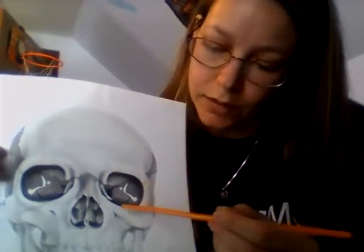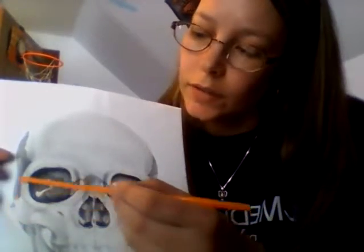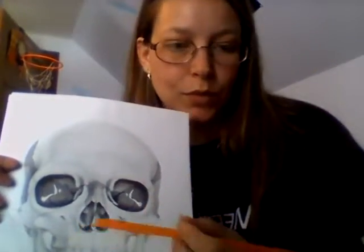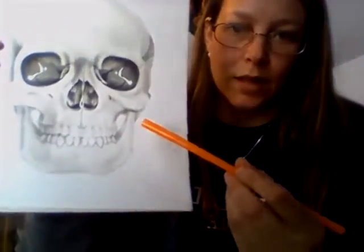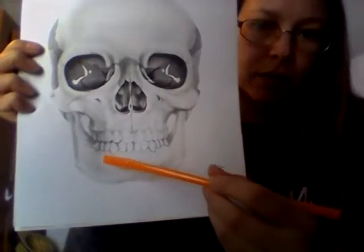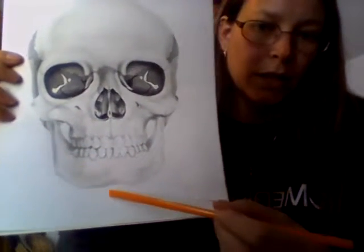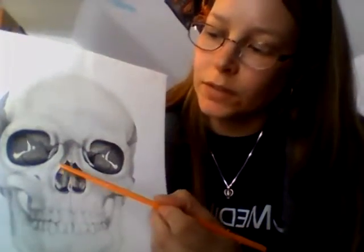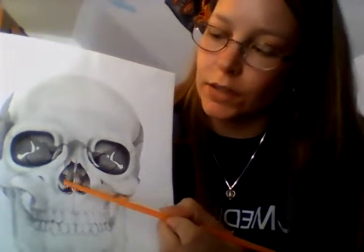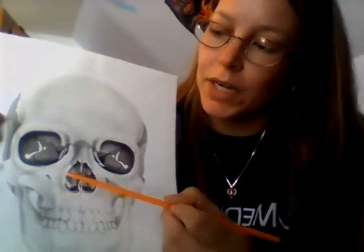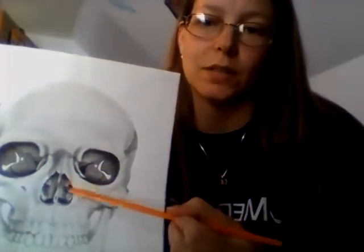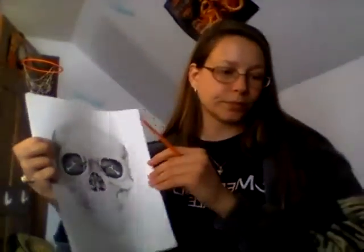Over here is the zygomatic bone, and this bone down here is the mandible. The middle nasal concha and the inferior nasal concha are part of the ethmoid bone, so they're all connected in here — you just can't see it because it's behind the nasal bone. Okay, we'll go to a different view.